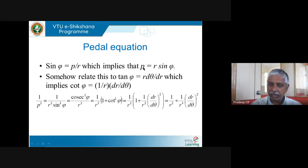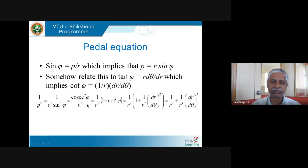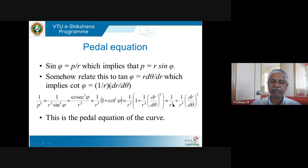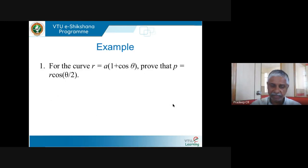To recapitulate: p = r sin φ, and tan φ = r dθ/dr, which gives cot φ = (1/r)(dr/dθ). Then 1/p² = (1/r²) cosec² φ = (1/r²)(1 + cot² φ). Substituting cot φ gives the full pedal equation expression.